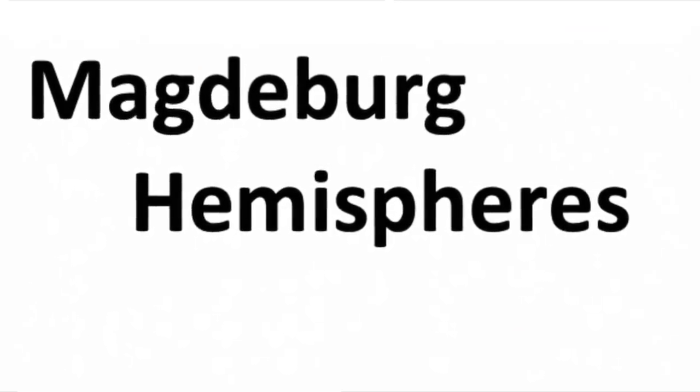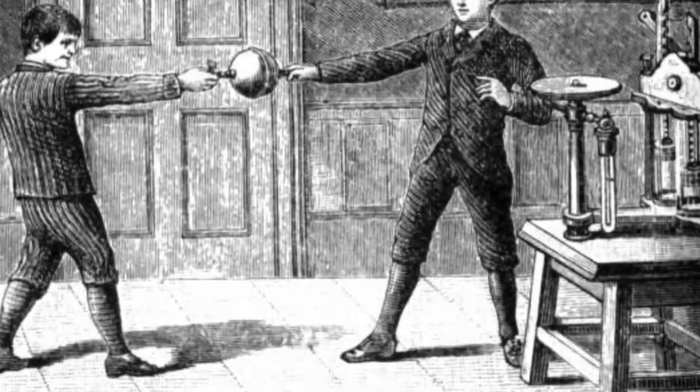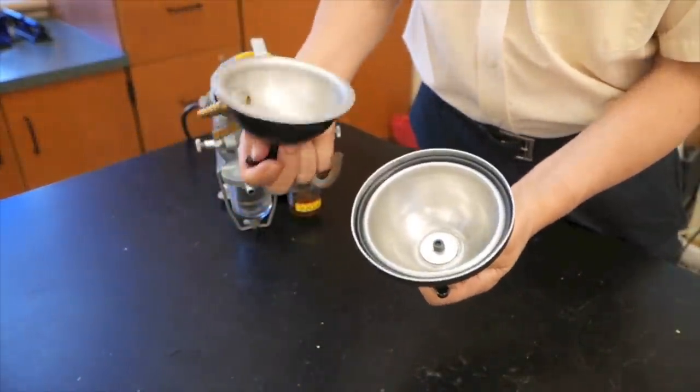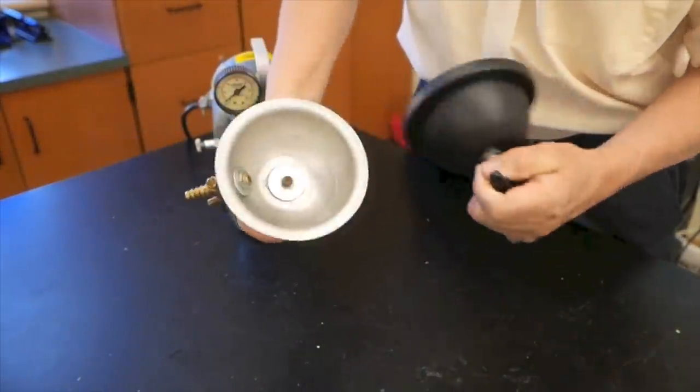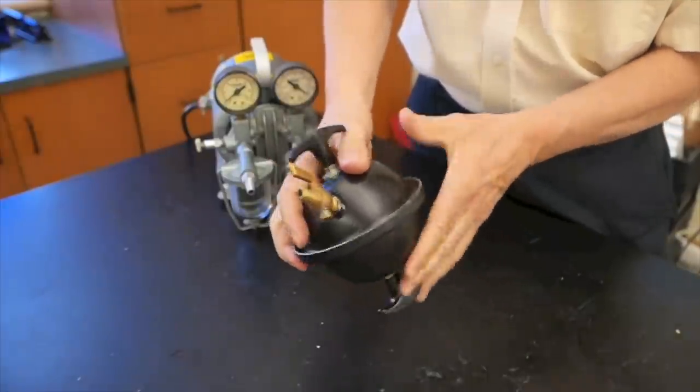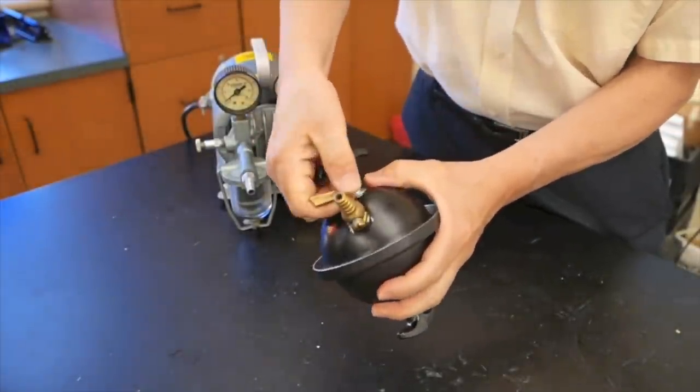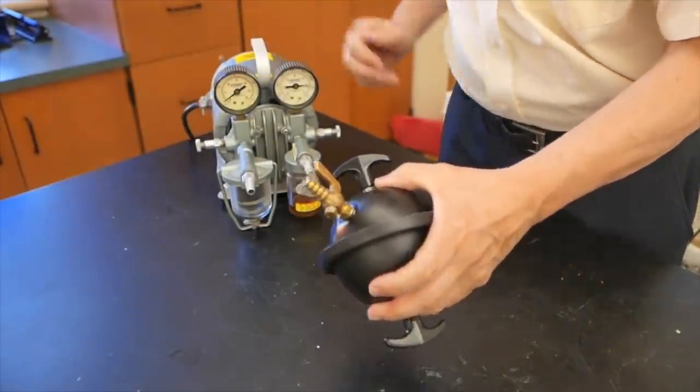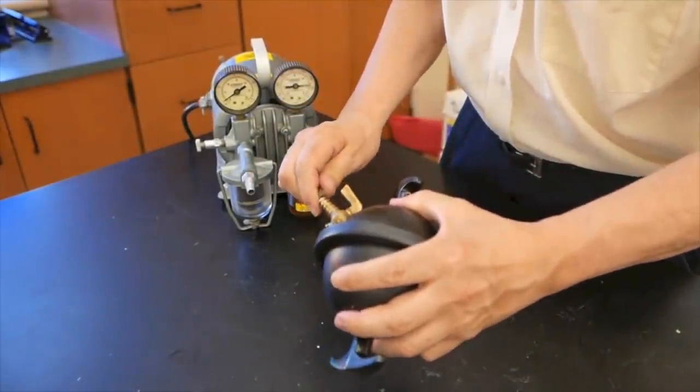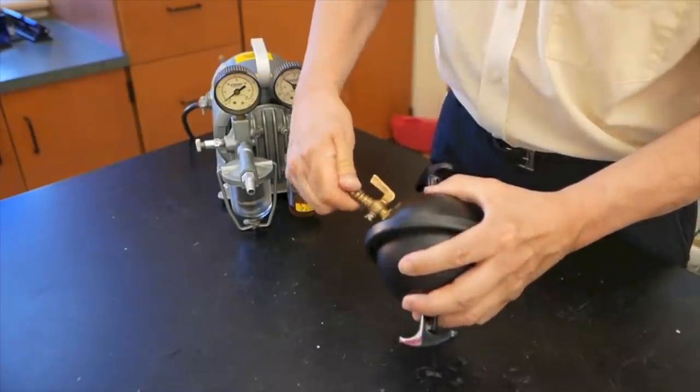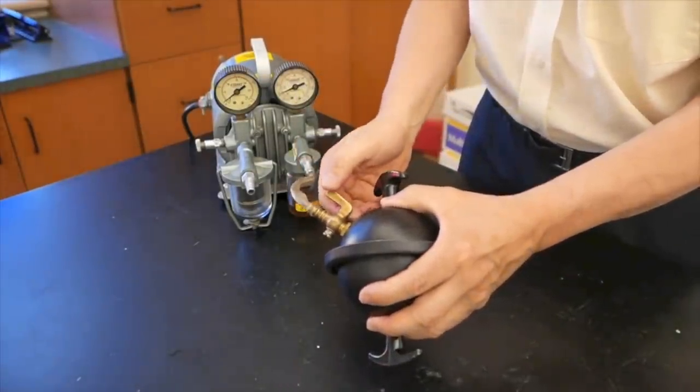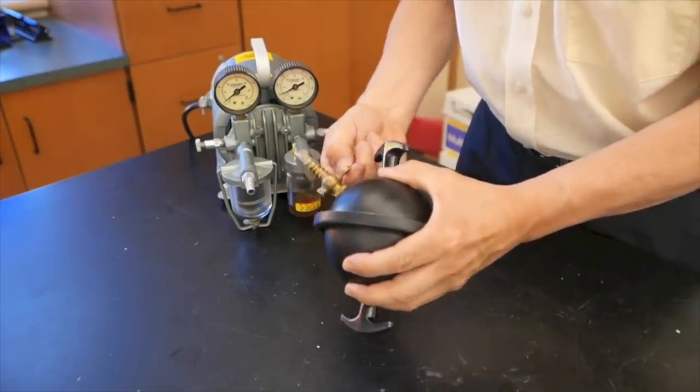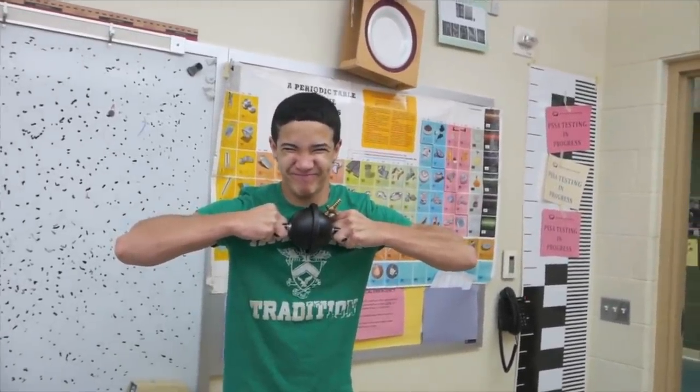Now we can use the same setup for the Magdeburg hemispheres. It's a ball that's been split in half and it has an O-ring inside to get a good seal. We put it together and it also has a shut off valve. Now when I hook it up to the vacuum pump, it doesn't take long to remove most of the air. So once the pressure is reduced, I'll seal it and then just take it off the pump.